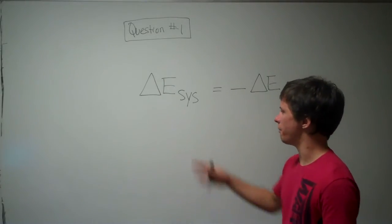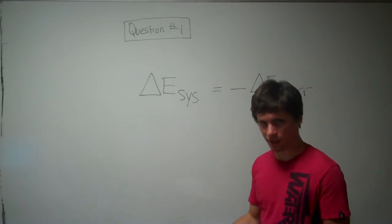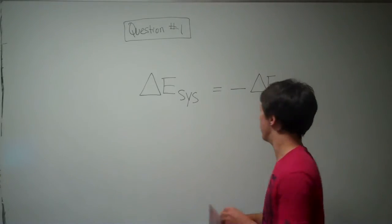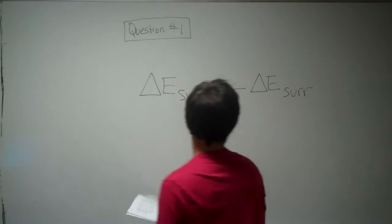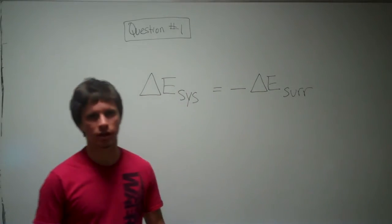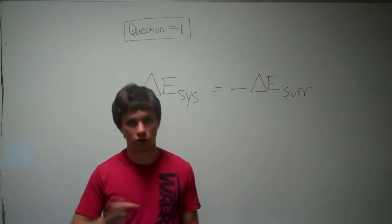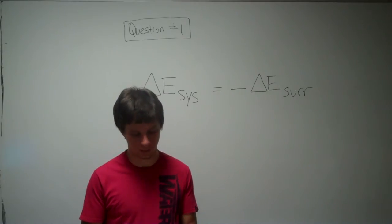So basically, whatever happens to the energy of the thing you're talking about, that's the system, is the negative change in energy to the surroundings, which is basically the rest of the universe other than the system that you're talking about.